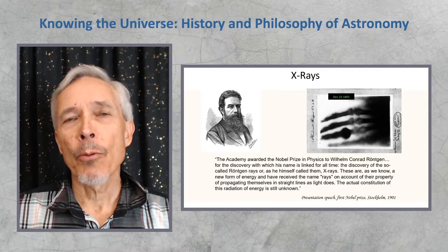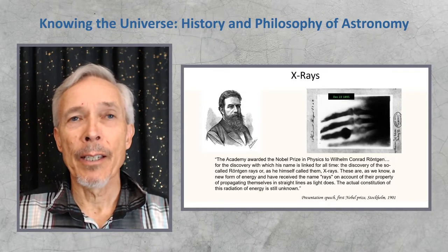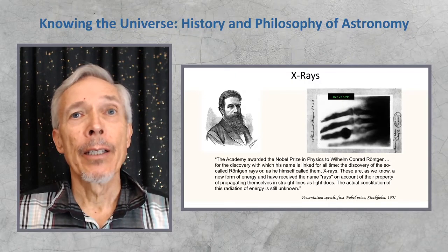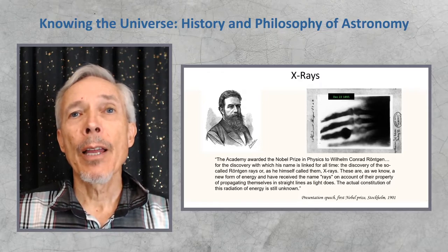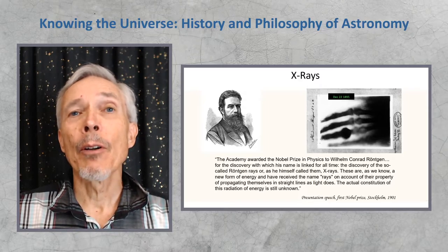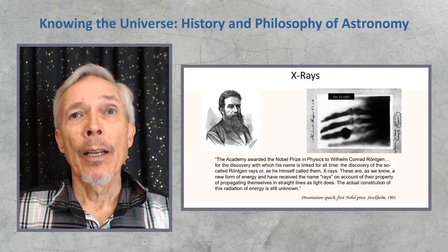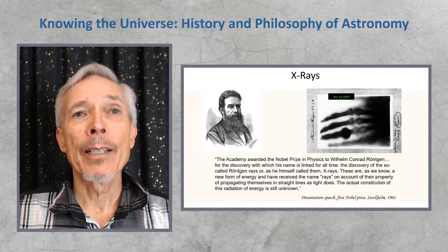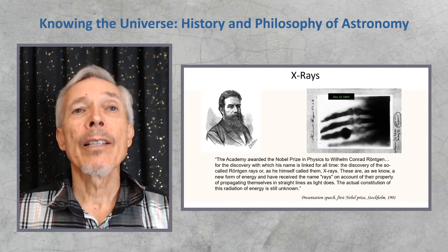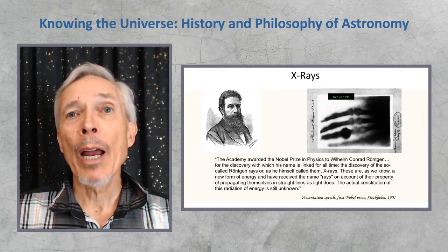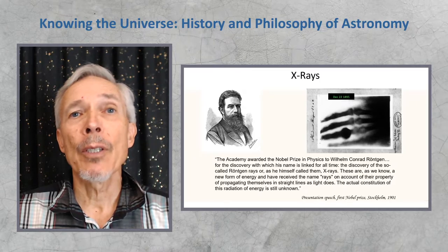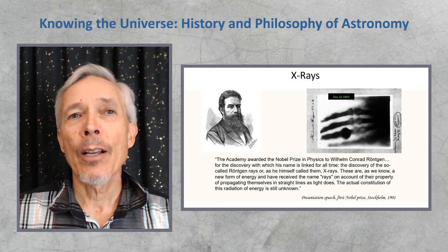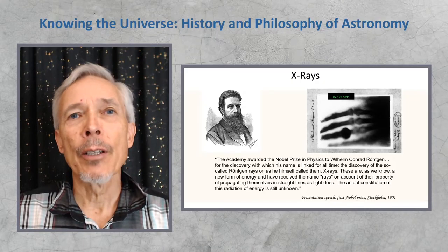There were other innovations around this time, and discoveries that surprised the world, not just physicists. X-rays, for example, were discovered by Wilhelm Conrad Röntgen, and the discoveries linked with his name of all time, although he himself called them X-rays. And he received the very first Nobel Prize in Stockholm in 1901. These are, as now we know, a new form of energy, called rays on the account of their propagating themselves in straight lines, as light does. At the time, the actual constitution of this radiation energy was unknown.